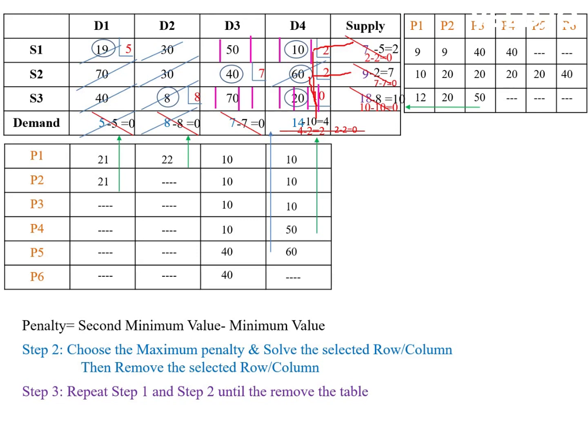Next, find penalty 6 for S2 row — we have only one value, which is 40. Similarly, penalty 6 for D3 column has only one value, which is 40. Observe supply and demand for the value 40: supply is 7 and demand is also 7. Allocate 7 here, then 7 minus 7 equals 0 and 7 minus 7 equals 0. Remove D3 column.